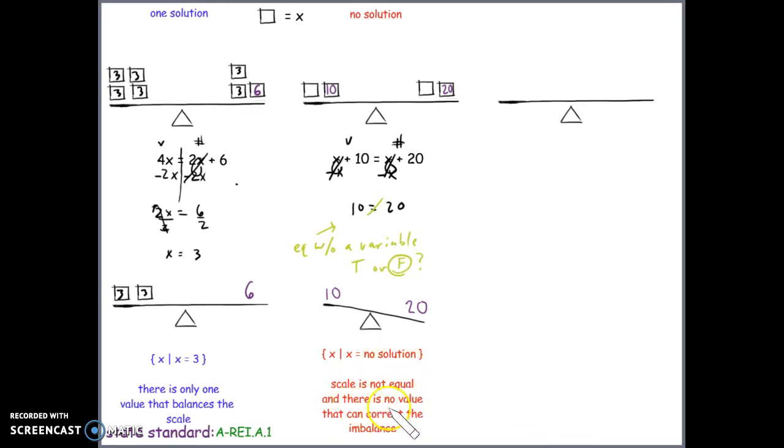So our answer for the solution set is no solution. The scale is not equal, and there is no value that can correct the imbalance. There's no value for the variable x that will make the left expression equal the right expression. So we say that x has no solution. Let's go over our third equation.